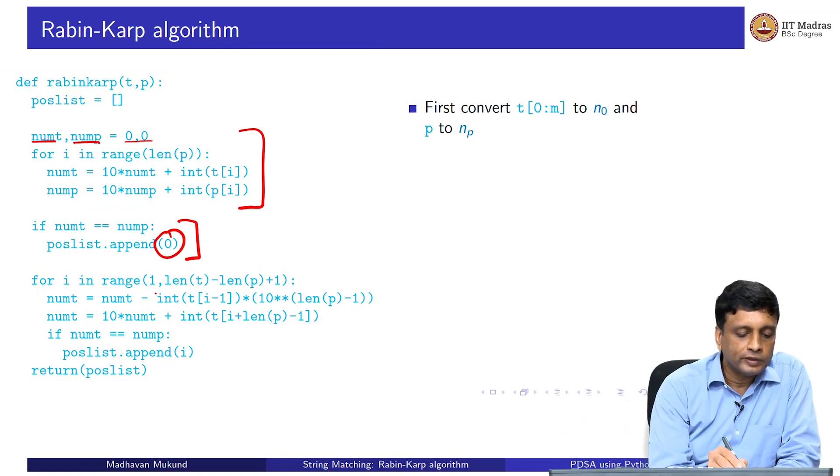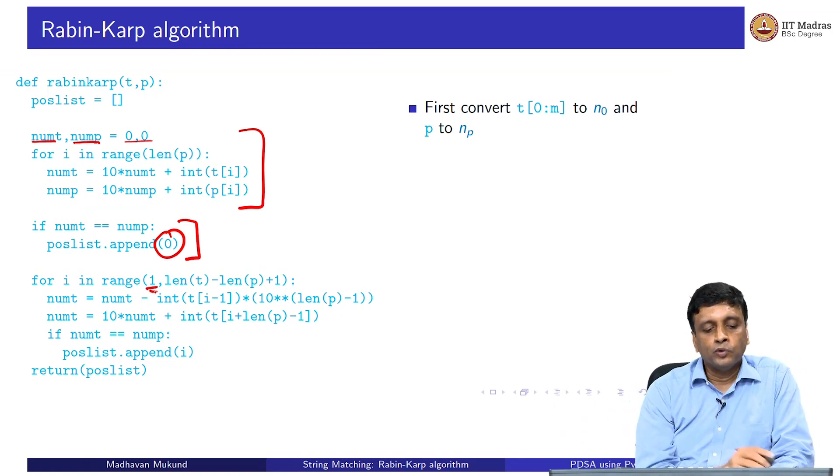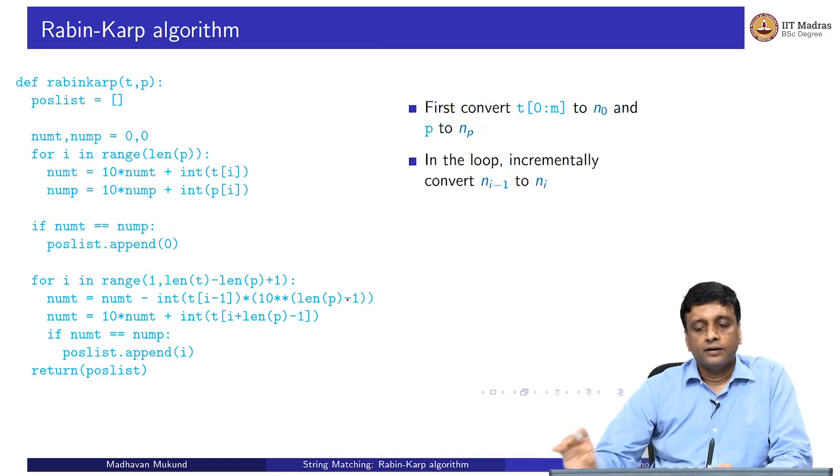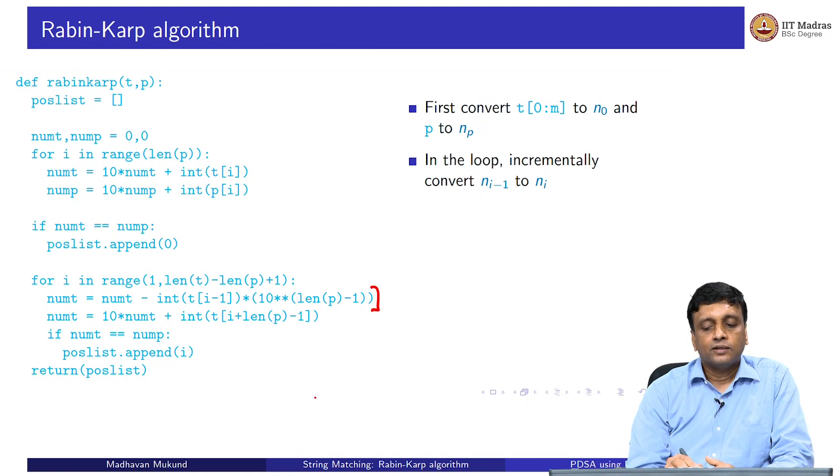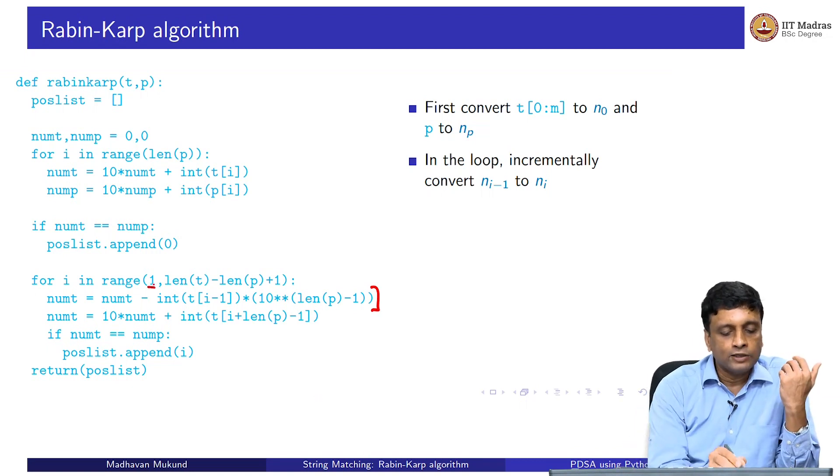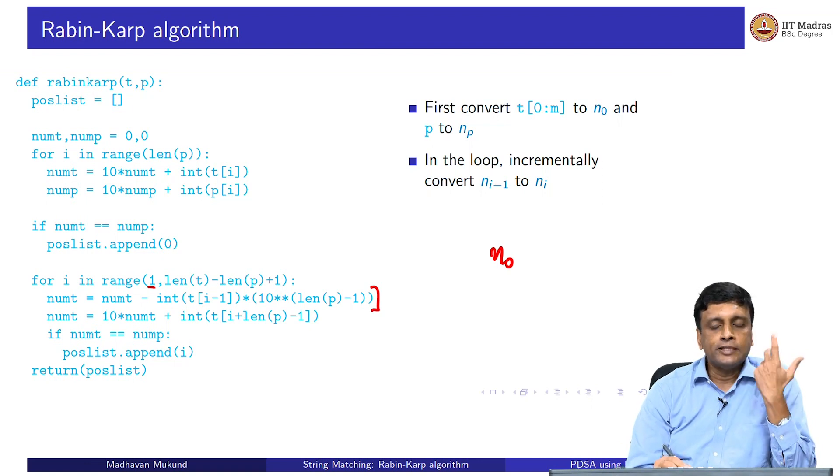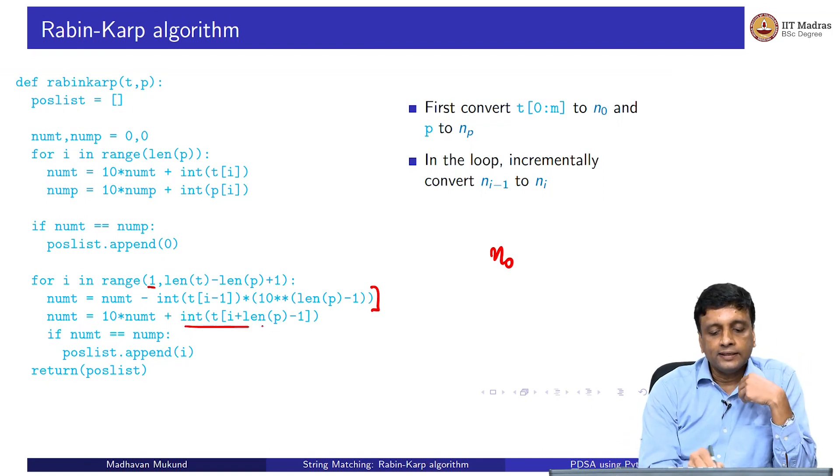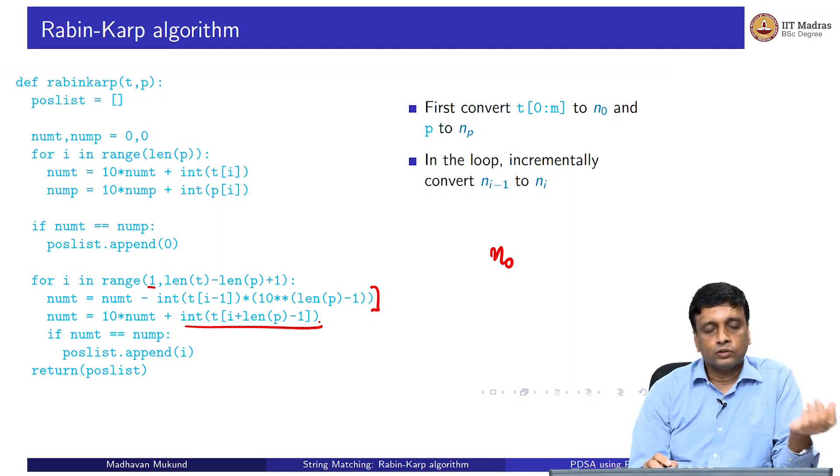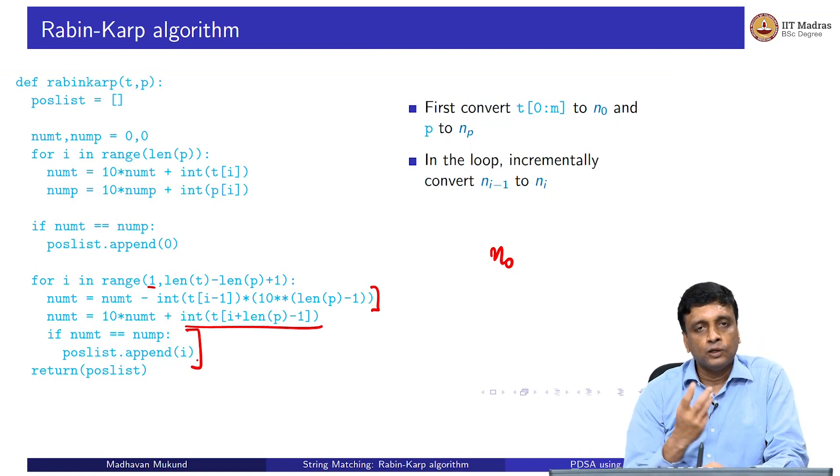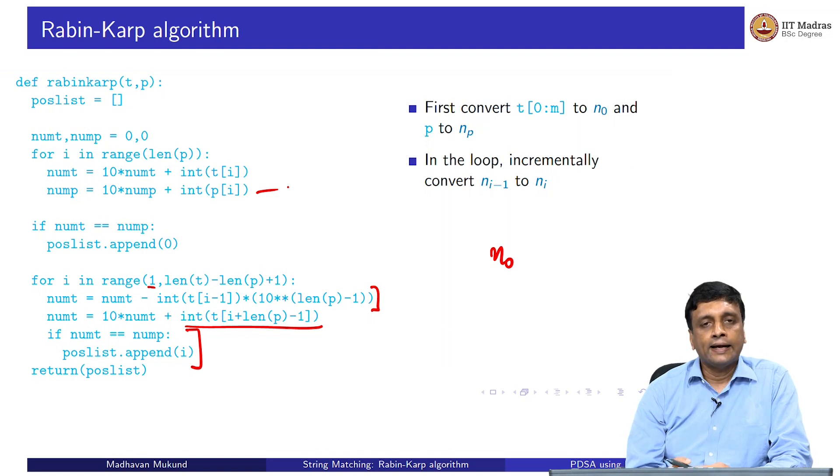From 1 onwards, we range through all the other positions. What we do is we first delete the highest digit. We have n[i-1], so if i is equal to 1 at the moment, we have n0. From n0, we delete the highest digit and then we add the digit corresponding to position i. Now we go from n[i-1] to n[i]. Once again, we check whether the number we have generated is equal to the number we are searching for. Remember that the pattern has already been computed once and for all as a number here. If it is so, then we add i to our list of positions. If not, we go ahead. The important thing is that this shift takes only constant amount of time.